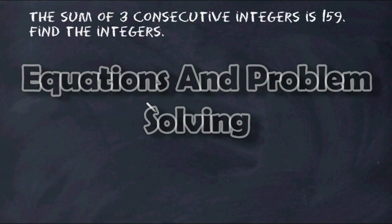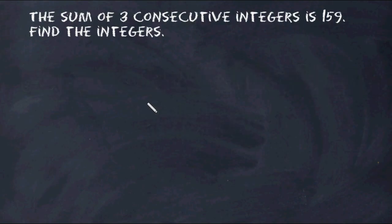Hello everyone, this is Mr. Masonette, and in this tutorial we are going to demonstrate how you can use equations to problem solve. This problem is saying that the sum of three consecutive integers is 159, and we have to figure out what those three consecutive integers are.